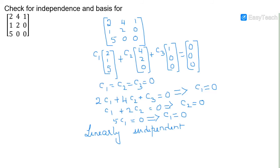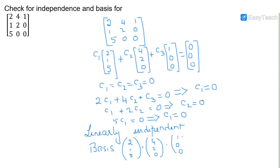Therefore, the three columns of the given matrix are linearly independent. The basis vectors are (2,1,5), (4,2,0), and (1,0,0), and they span the subspace R³.